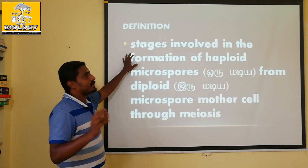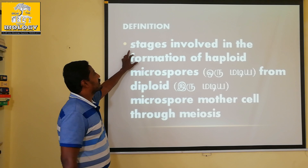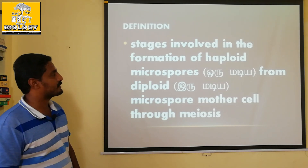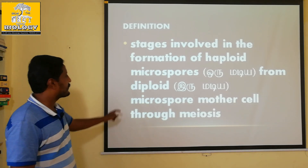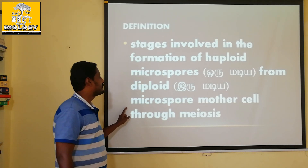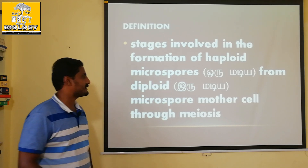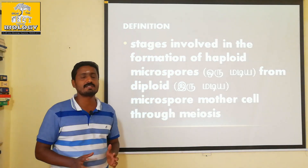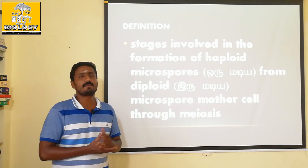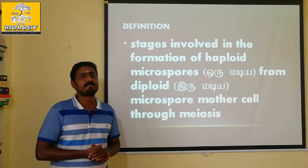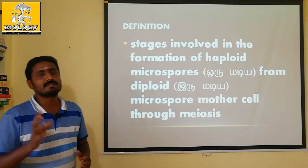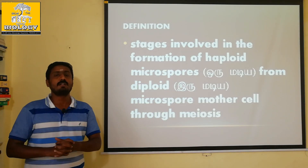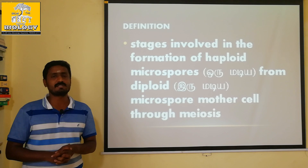Microsporogenesis involves the stages in the formation of haploid microspores from a diploid microspore mother cell through meiosis. The microspore mother cell forms microspores through meiosis, and the process is called Microsporogenesis.